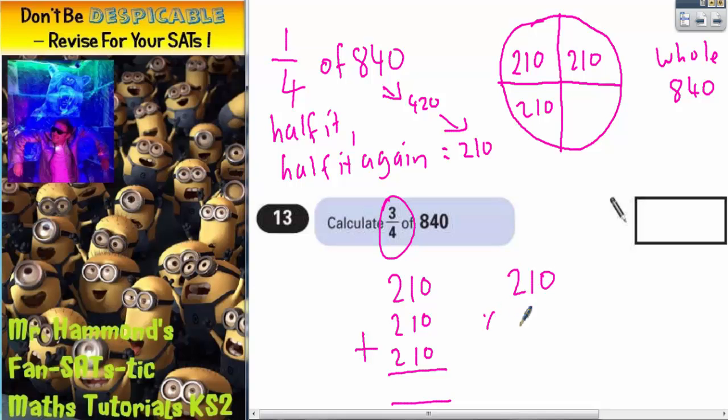Or we could say, what is 210 multiplied by 3? Because we've got the same number happening three times. Either way, it should give us the same answer. So, let's double check.